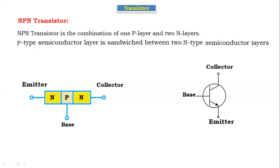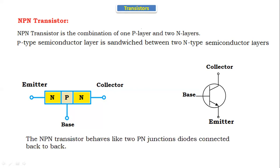In the NPN transistor, the emitter current direction will be outside. The NPN transistor behaves like two PN junction diodes connected back to back. The diode is a combination of one P layer and one N layer. The NPN transistor looks like two PN junction diodes connected back to back: NP and PN.